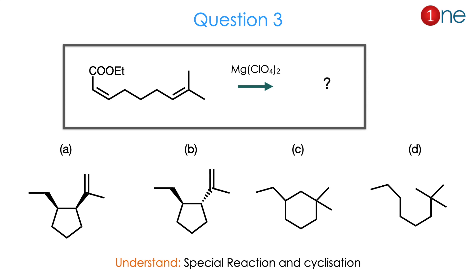Question number 3. The starting material is a linear system with a diene, an ester group, and 2 methyl groups. The alkenes are in the cis form and you are asked to find the product. The mechanism flow shows the products are cyclized ones, so a cyclic reaction definitely occurs. The 5-membered or 6-membered ring formation and the stereochemistry of addition — whether above or below the plane — are important. The answer is A.